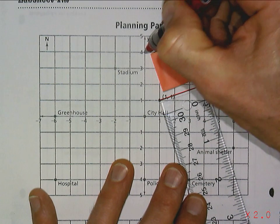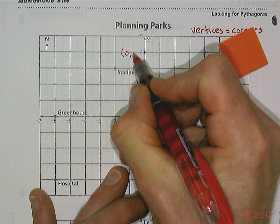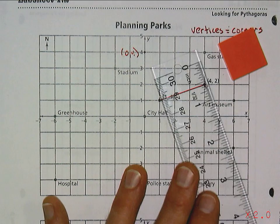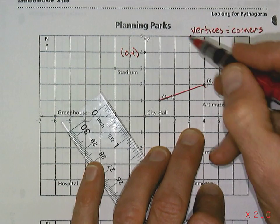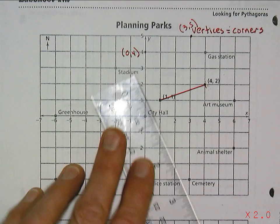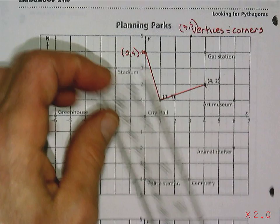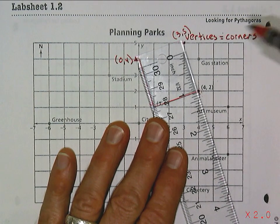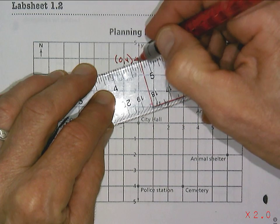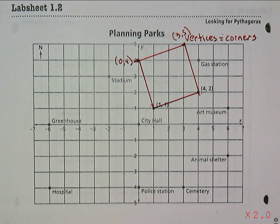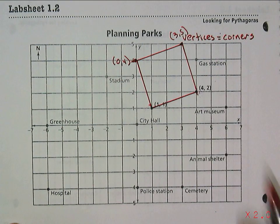It looks to me like if I went to (0,4) — so (0,4) is one corner — that's the coordinate of that corner, and then the other coordinate up here at (3,5). It looks to me like if I connect those points, I could make a square for the park shape with those two other vertices or corners. So it looks like (0,4) and (3,5) would give me one possible set of corners for this park.